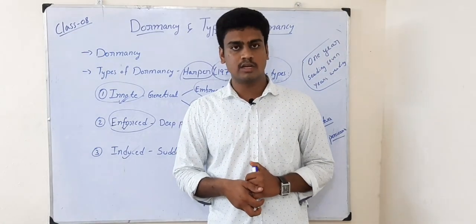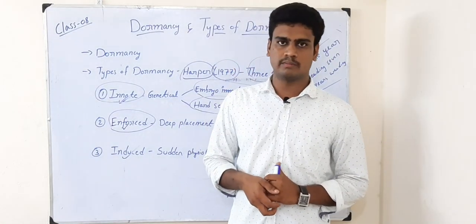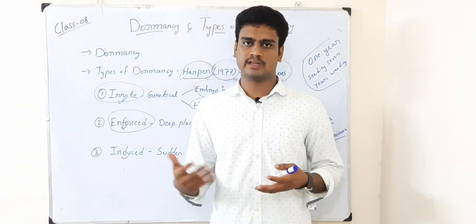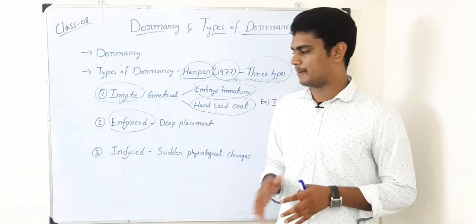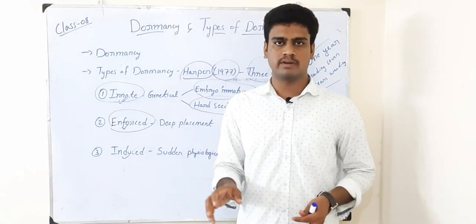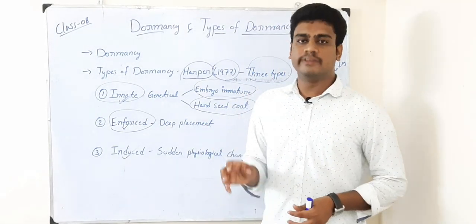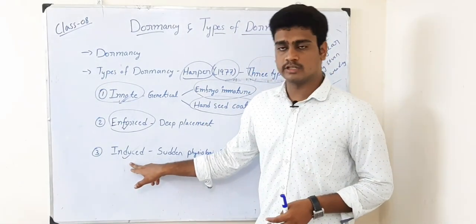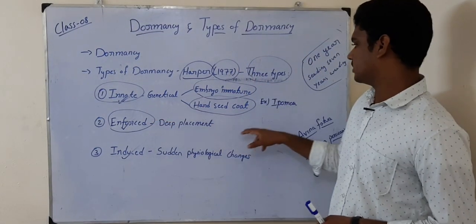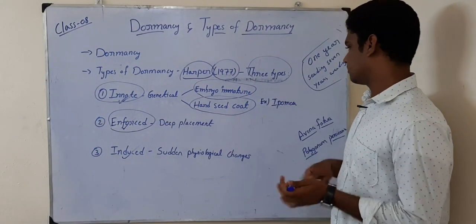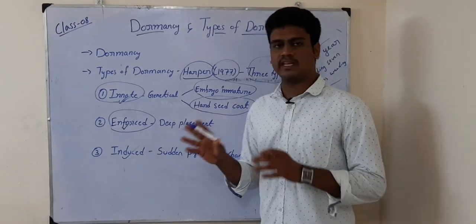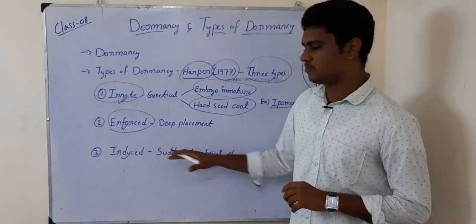The next one is induced dormancy. It is sudden physiological changes in the seed that cause it not to germinate. Because of external factors like climate or anything that causes sudden changes in the seed, if it is causing the weed seed not to germinate, that is called induced dormancy. For innate dormancy, the best example is Ipomoea. For enforced and induced dormancy, there is no single particular example — it depends on the condition.